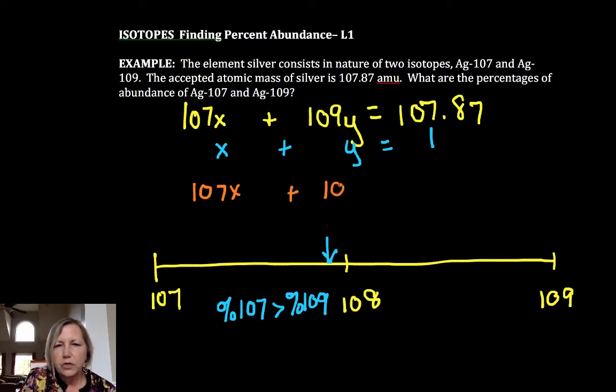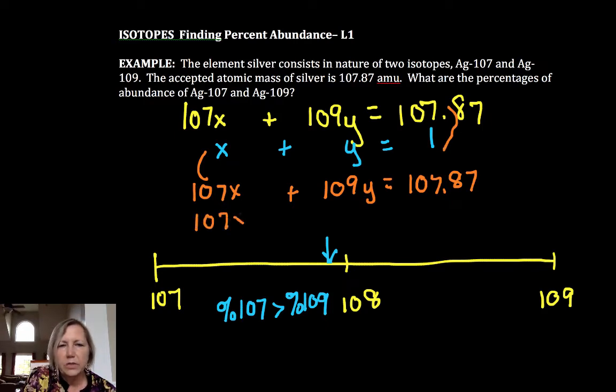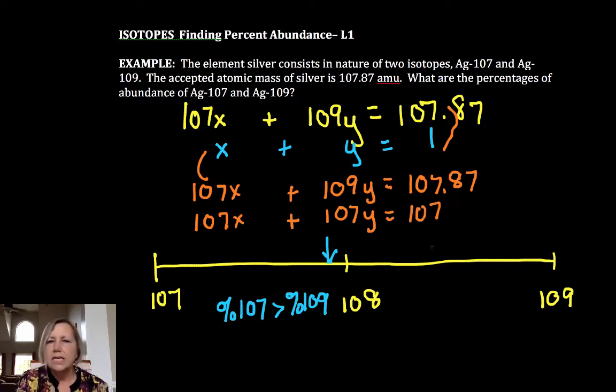So I've got 107x, I'm just rewriting my top one. And I'm going to multiply my bottom one. You can multiply by either 107 or 109. I'm going to multiply it by 107 so I avoid, I like to multiply by the smallest number. So I'm going to go through and multiply the whole thing by 107. As long as everything in this equation is multiplied by 107, I maintain my equality. And then I'm going to subtract those two equations.